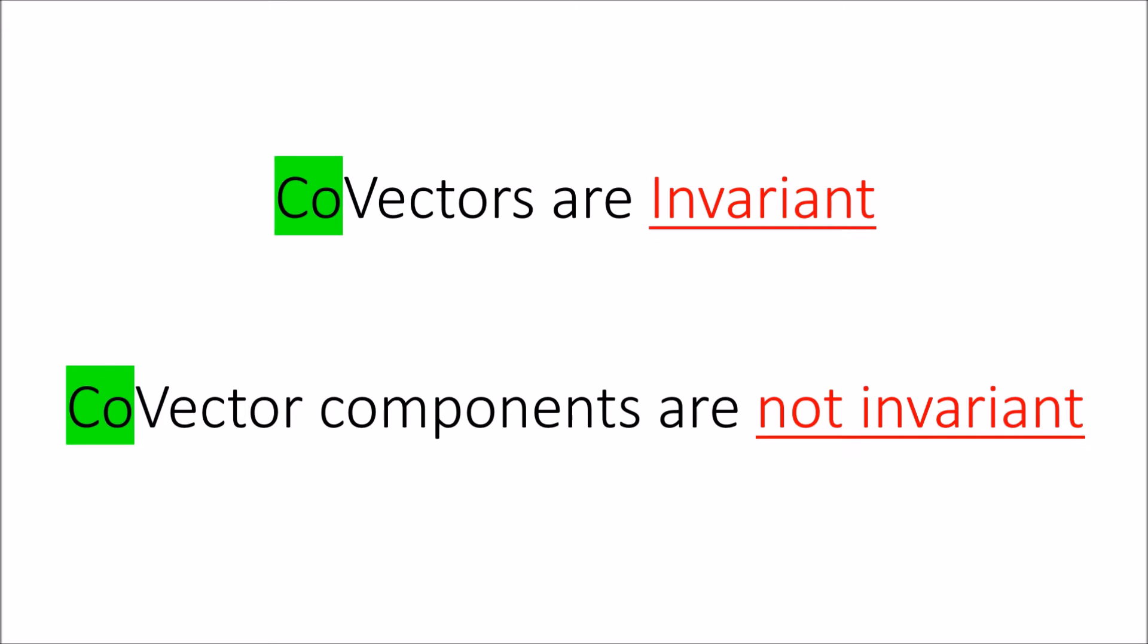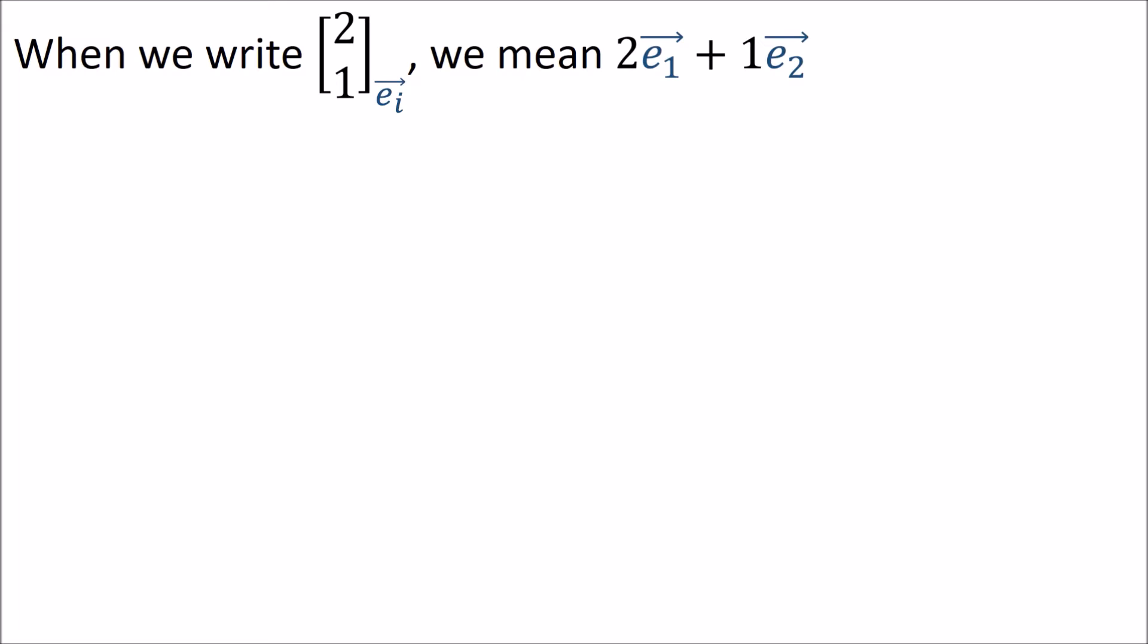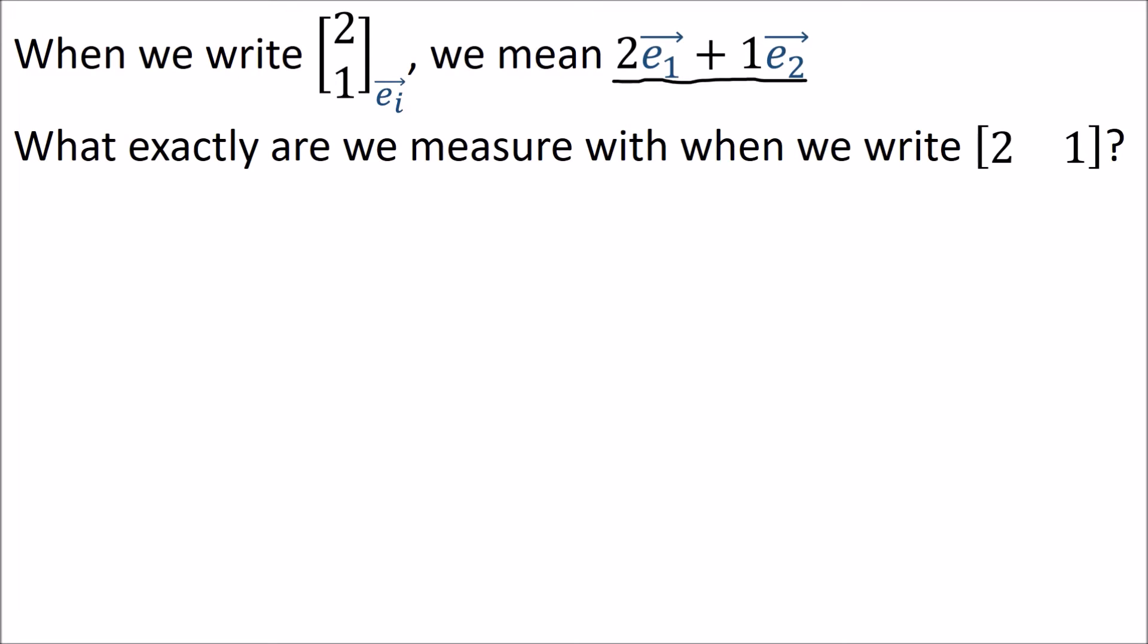What do we even mean when we say that a covector has components? When we write the column vector [2, 1] in reference to a basis, what we really mean is that this vector is given by the linear combination 2e₁ plus 1e₂. We're just telling you how much of each basis vector is needed to make the vector. So what are we talking about when we say a row vector [2, 1]? Like 2 of what and 1 of what?